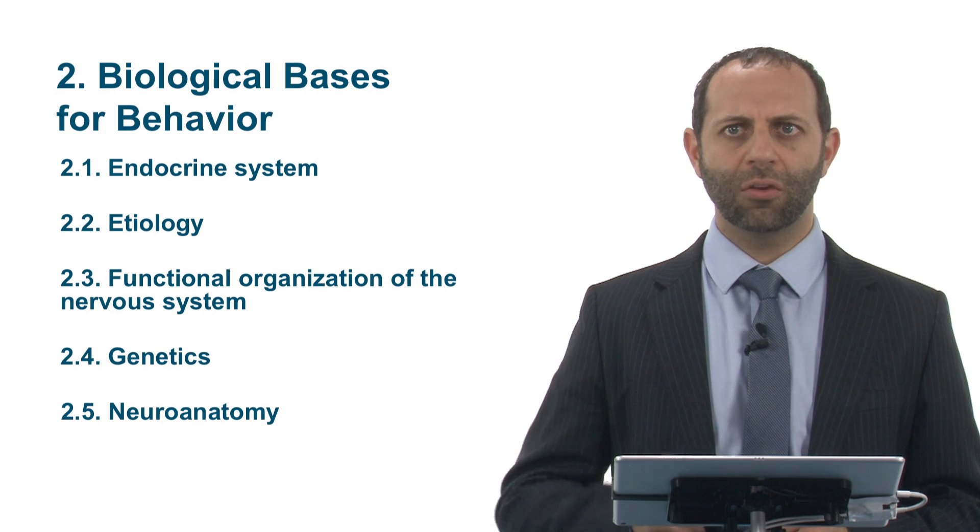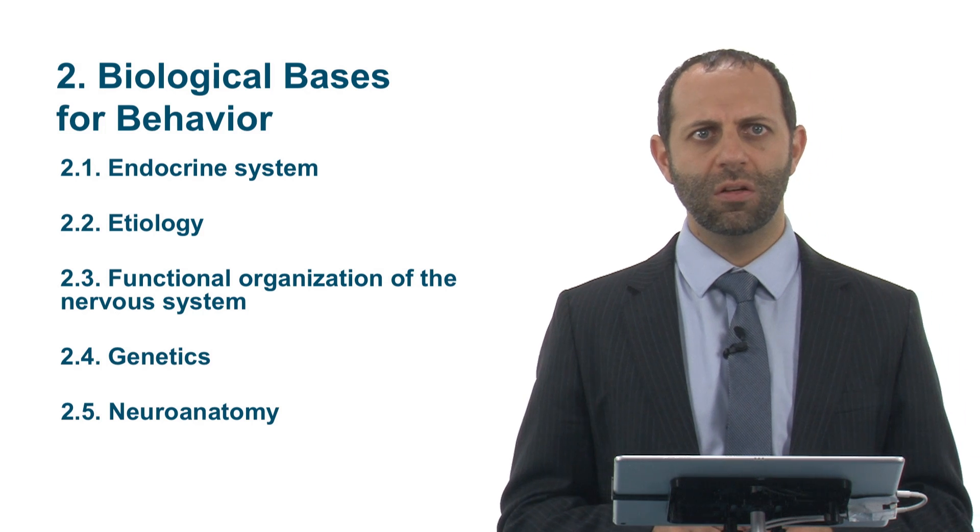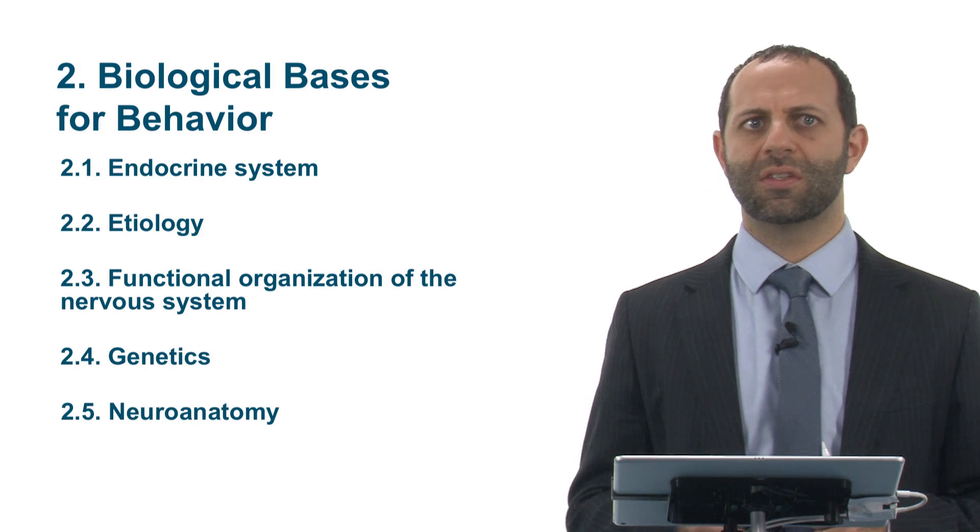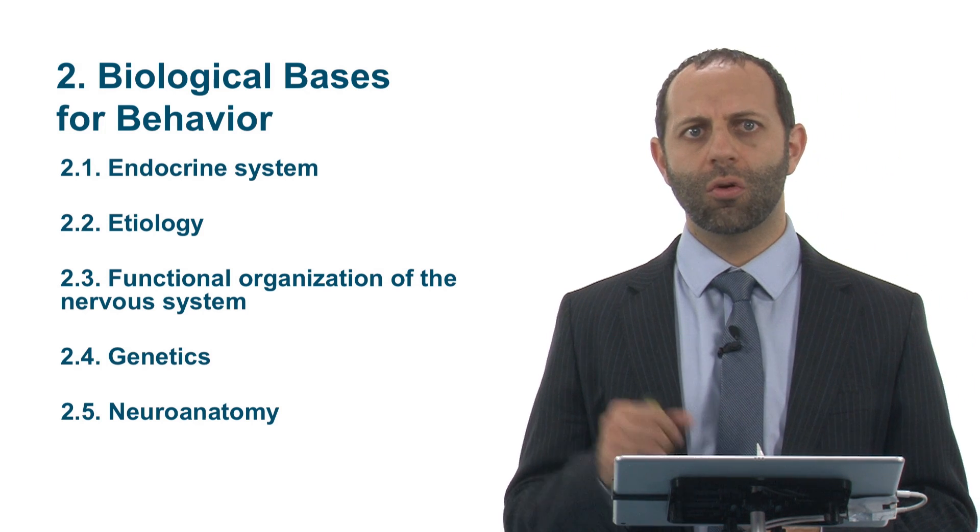We will review the endocrine system followed by the concept of etiology. We will then turn our attention to the functional organization of the nervous system. We will then talk about genetics and finally neuroanatomy.